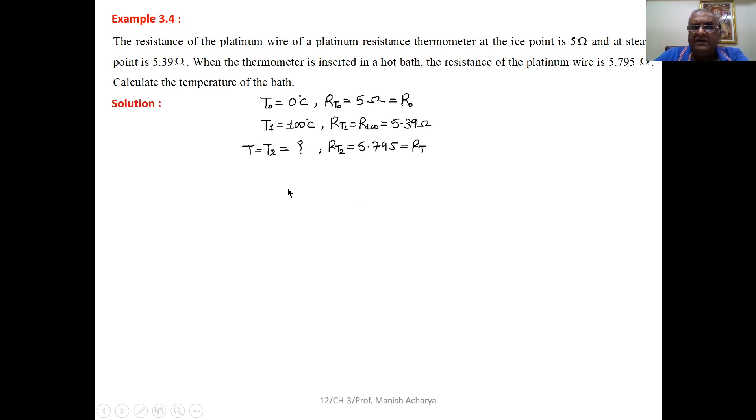Then the temperature of hot bath that we want to find, we don't know. Then at that particular temperature of the hot bath, the resistance R at T2, or we can say R at temperature T, that is 5.795 ohm.